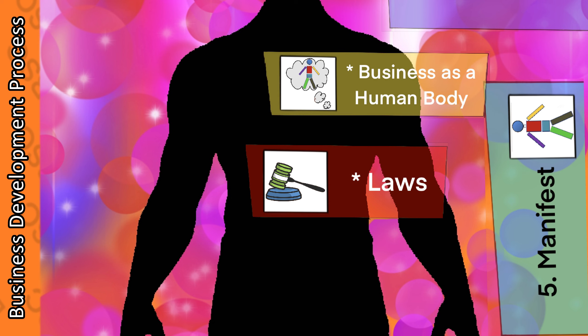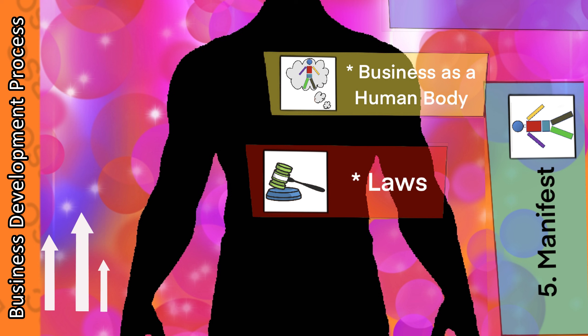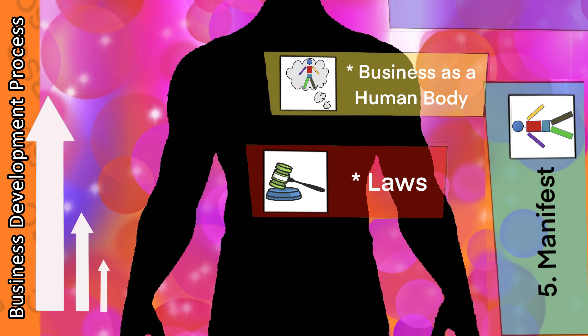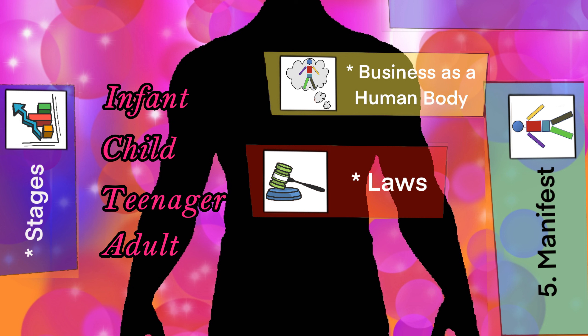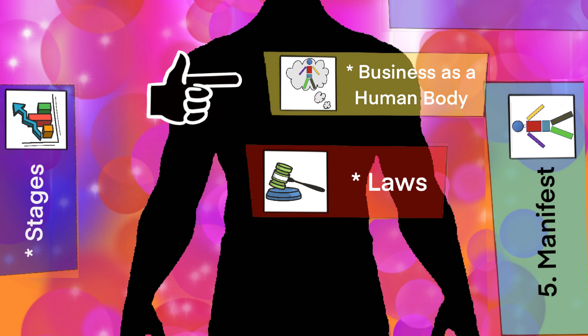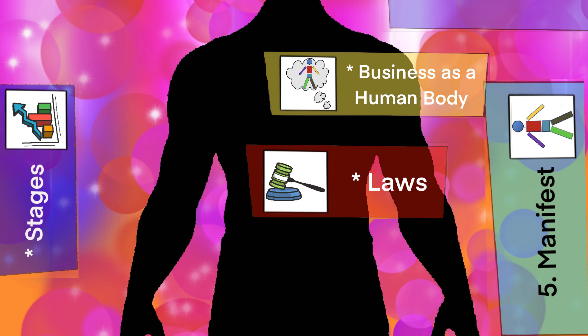As discussed before, business is only an infant at the time of birth. Naturally, the business will grow up. How big or small a business is is usually defined by its current stage of supply chain. There are five stages of business development that can be represented as an infant, child, teenager, adult and an elder. Just like business as a human body and laws governing organization and sustainability, this is also just a concept and must be taken with a grain of salt.